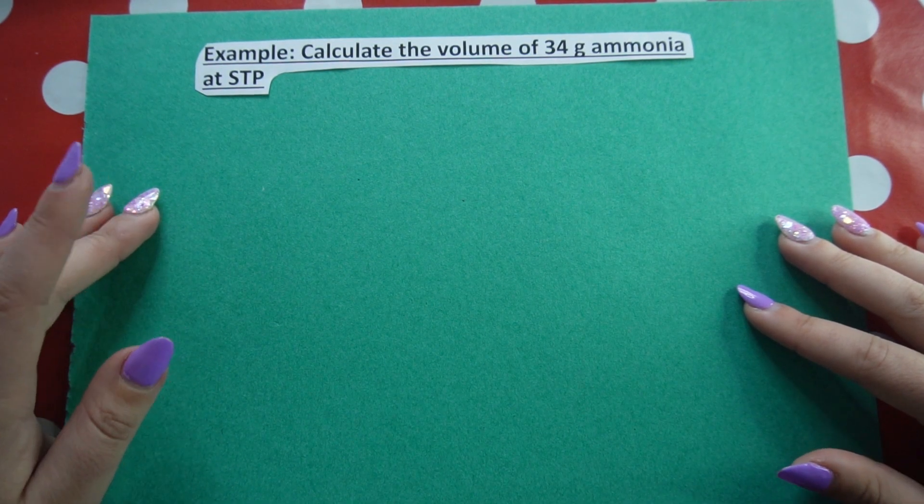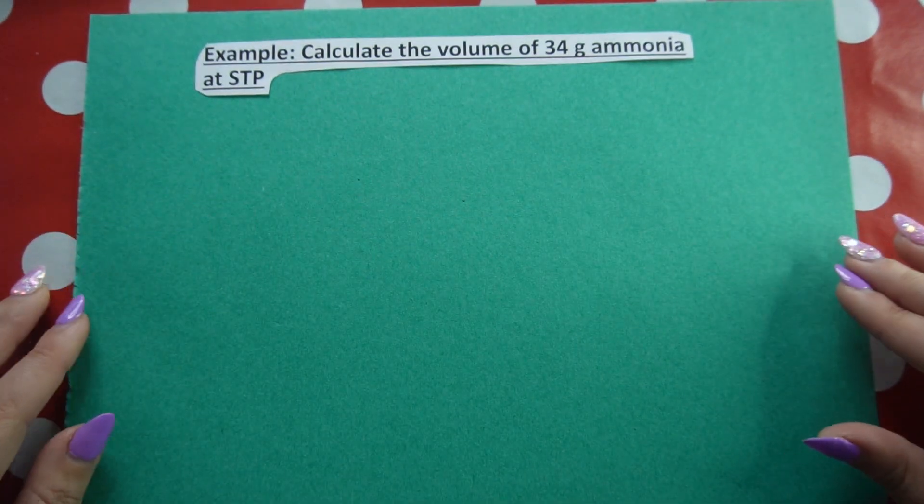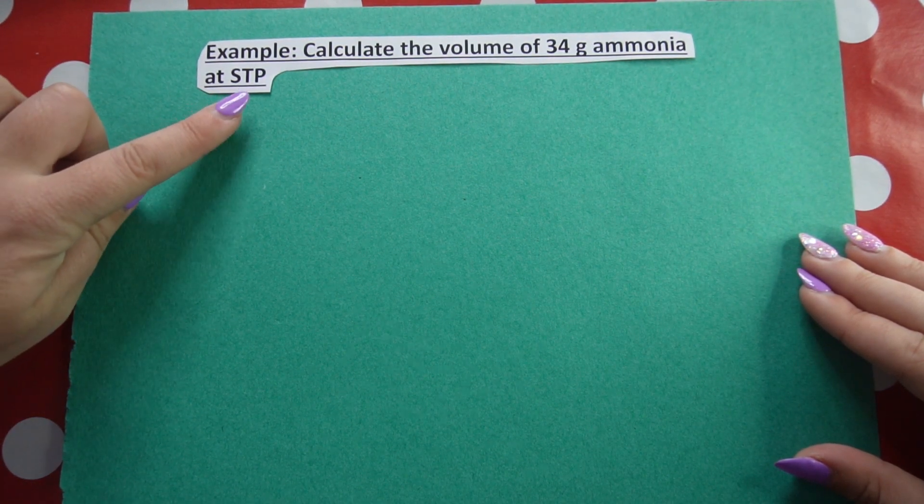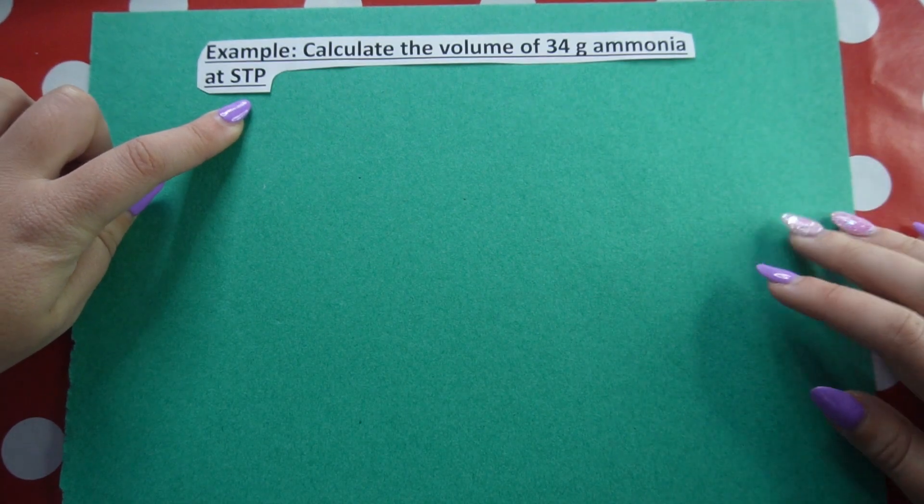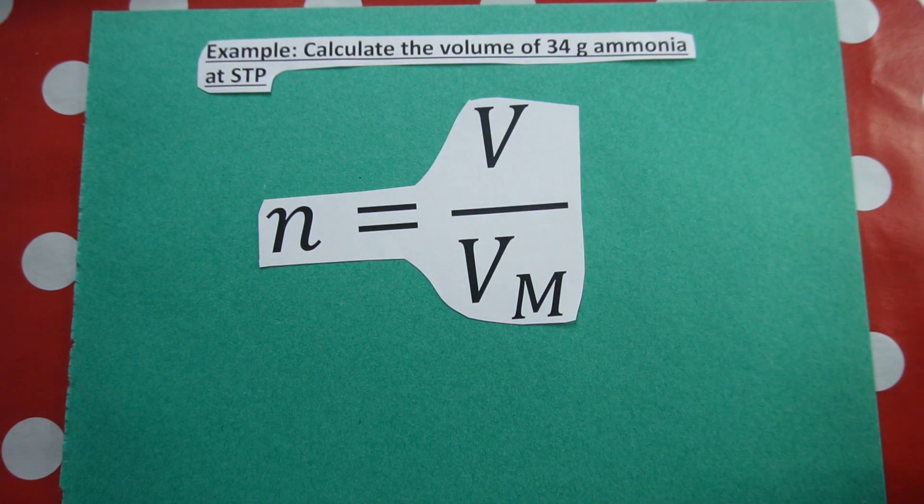My second example reads as follows: Calculate the volume of 34 grams of ammonia at STP. Immediately when you see STP, standard temperature and pressure, and we know we're dealing with ammonia, a gas, we know we need to use this formula to calculate volume.